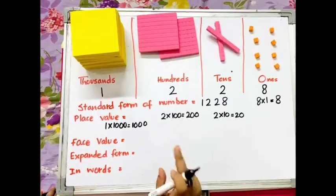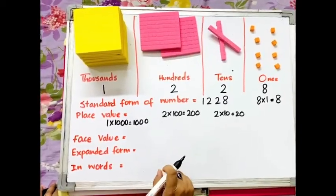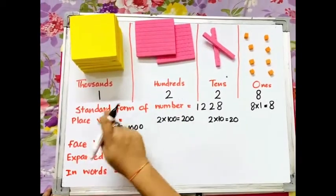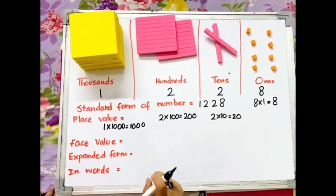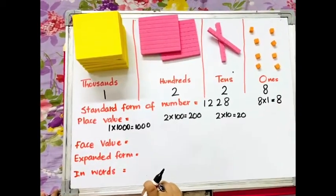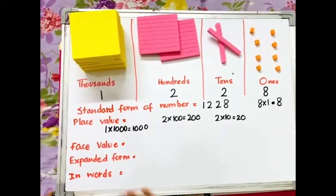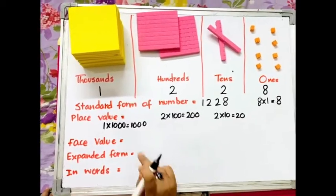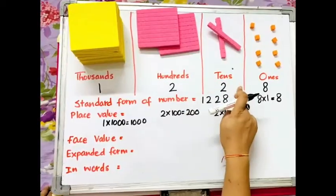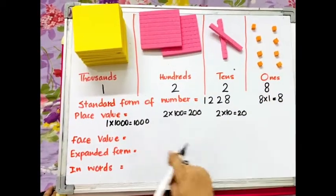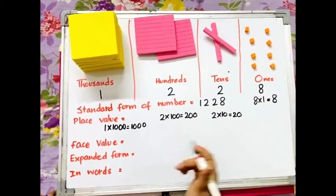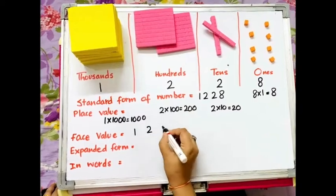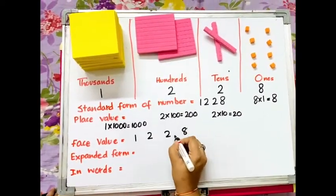Another question which can come to your mind can be what is the face value of these numbers? Now, face value of any digit is the digit itself at whatever place it may be. So, the face value of 1, 2, 2, 8 in this number will be the same: 1, 2, 2, 8 only.